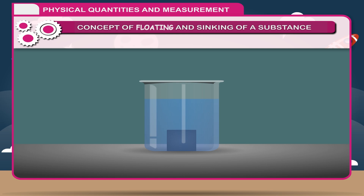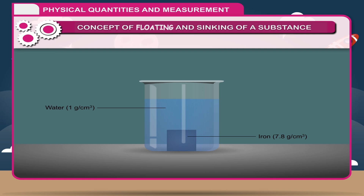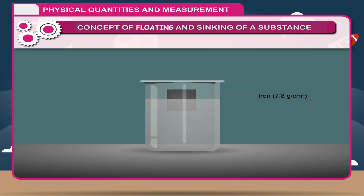When the density of an object is more than the density of the liquid, it will sink in it. For example, iron has a density of 7.8 grams per centimeter cube and water has a density of 1 gram per centimeter cube. Iron is heavier than water, hence it will sink in it. But the density of mercury is 13.6 grams per centimeter cube, so if iron is put in mercury, it will float on mercury because iron is lighter than mercury.